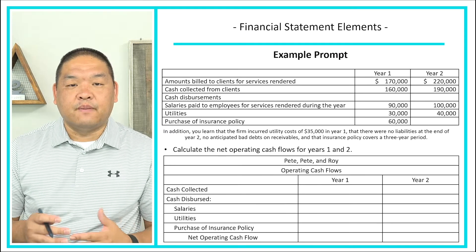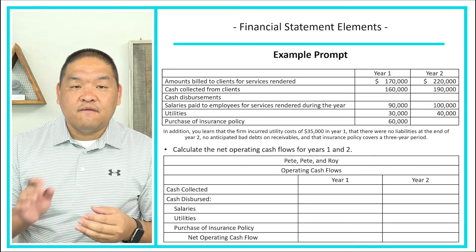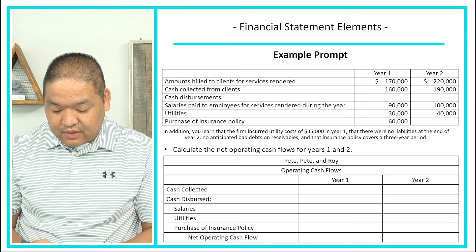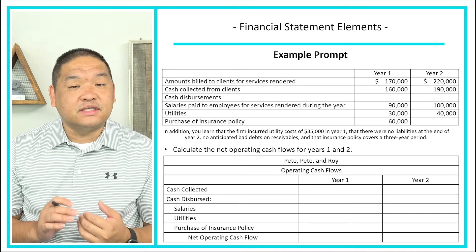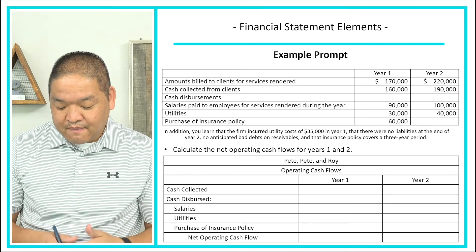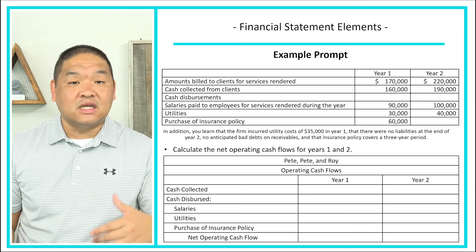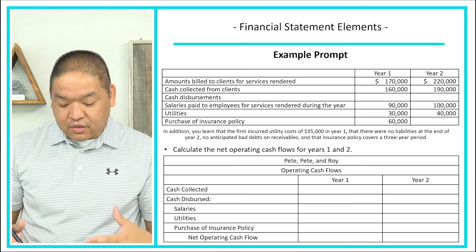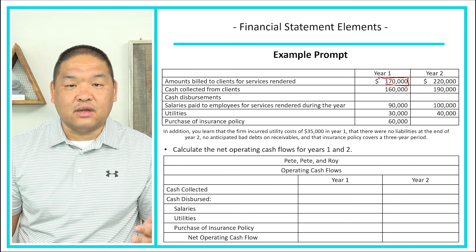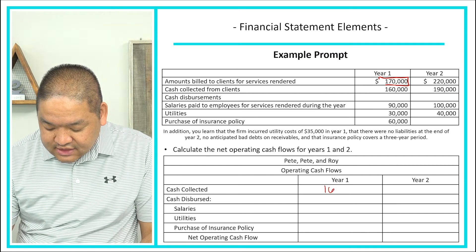We start with calculating the net operating cash flows for years one and two. Remember, net operating cash flow is all about how much cash comes in versus how much cash goes out — it's basically the cash basis of accounting. Cash collected from clients in year one was $160,000. Even though we billed $170,000, only $160,000 was actually received, so that's our cash inflow for year one.